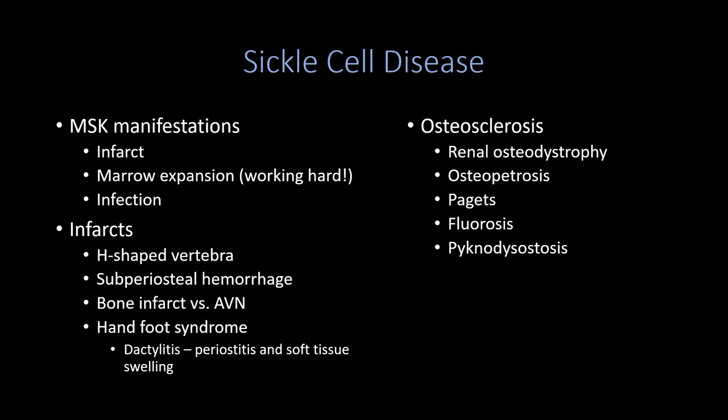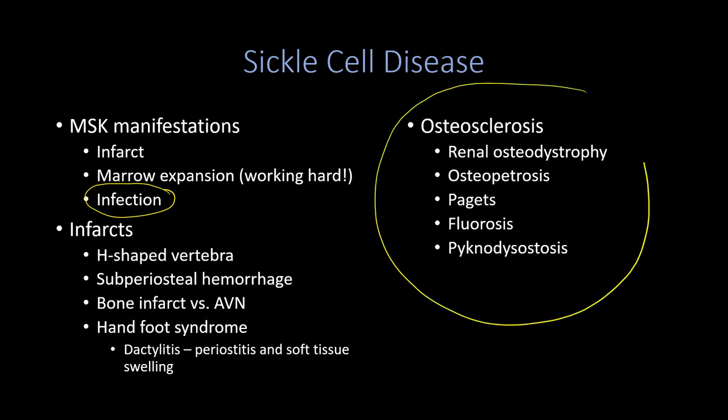The three main MSK manifestations of sickle cell disease are: infarct from vaso-occlusive disease, marrow expansion as the marrow works hard to replace sickled red blood cells, and infection. For infection, Salmonella is more specific and Staph aureus is more common. Infarct findings include the H-shaped vertebra, bone infarct versus AVN, and dactylitis or hand-foot syndrome with periostitis and soft tissue swelling. The differential for diffuse osteosclerosis includes renal osteodystrophy, osteopetrosis, Paget's disease, fluorosis, and pycnodysostosis.